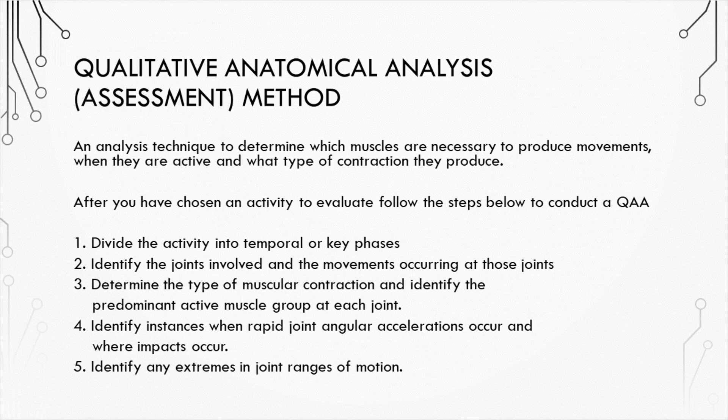After you've chosen an activity to evaluate, divide your activity into temporal, or key phases. Identify the joints involved and the movements occurring at those joints. Determine the type of muscular contraction and identify the predominant active muscle group at each joint. Identify any instances where rapid joint angular accelerations occur and when impacts occur. Then you can identify any extremes in the range of motion.